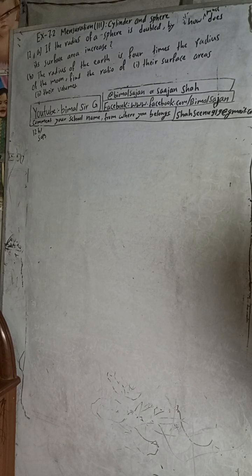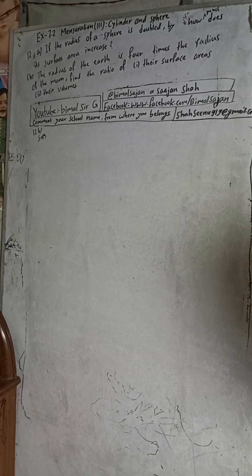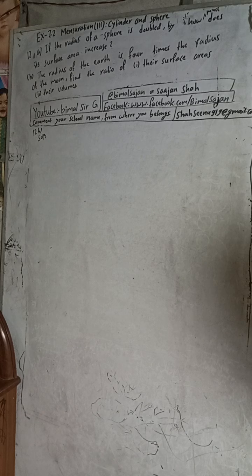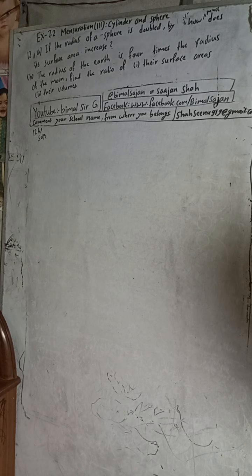Hi class 9 and 10 students, welcome back to Bimal Sarji's YouTube channel. This is question number 12b, exercise 7.2, mensuration — third part, cylinder and sphere, Excel Vedant Mathematics class 9. I have already solved 12a, so check the playlist. My Facebook and TikTok IDs are given in the video description — follow me on both so that if my YouTube channel is blocked, I will upload videos there for continuous content.